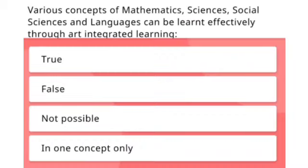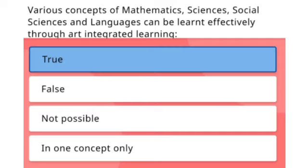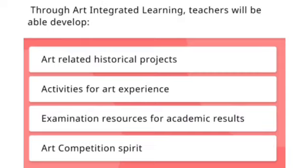Next question: Various concepts of mathematics, science, social science and languages can be learned effectively through art integrated learning. Options: True, False, Not possible in one concept only. The right answer is true.